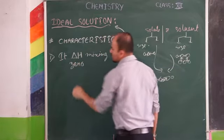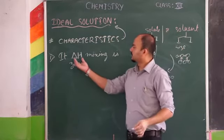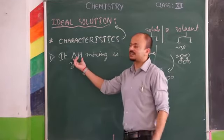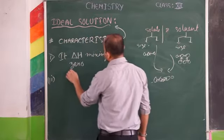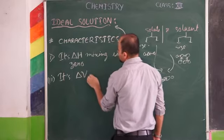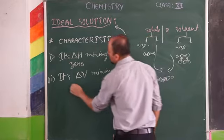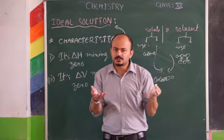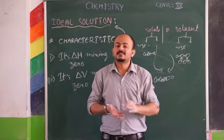What does it mean? When these two — A and B, solute and solvent — are mixed, there is no heat gain or heat loss. That means delta H, the change in enthalpy, is zero. Similarly, its delta V mixing is also zero. Whenever we are mixing two volumes of these liquids, if it is to form an ideal solution, there should be no change in volume.